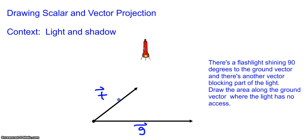Light is exposed everywhere on the ground vector except for a certain spot. The area where the light is not exposed is from here to here — anything past here the light is going to be exposed to. So what I'm drawing right now is the vector projection.